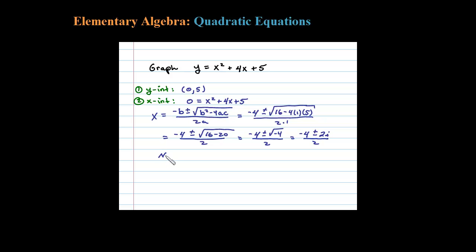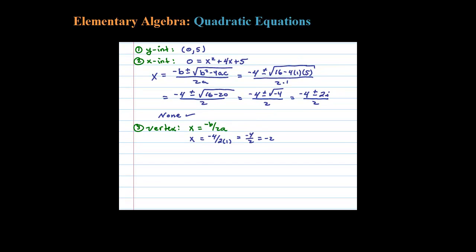Okay, let's next find the vertex. We can find the x value of the vertex with this handy formula: negative B over 2a. So plugging in the values, we have negative 4 over 2 times 1. Negative 4 over 2 is negative 2.